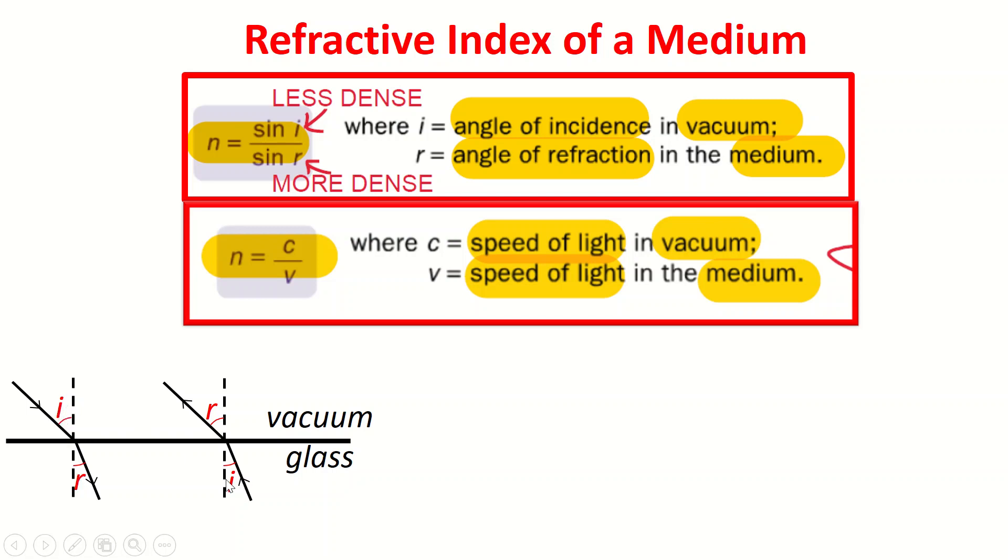In the first case, this is my i, this is my r. In my second case, this is my i and this is my r. Look at this angle, that's how it approached in the glass first then goes into vacuum.